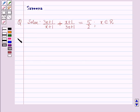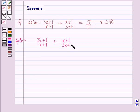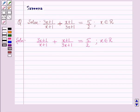Now we will start with the solution. We have to solve (3x + 1)/(x + 1) + (x + 1)/(3x + 1) = 5/2, where x belongs to R. For solving this equation, first of all we will convert it to quadratic form. For this, put (3x + 1)/(x + 1) = y.